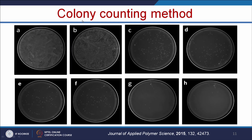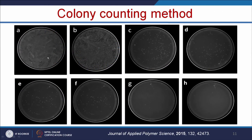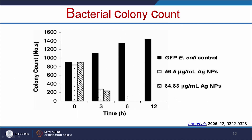Another method is the colony counting method. From the turbidity assay test tubes, inoculate into a bacterial plate by spread plating technique and incubate overnight, then count the number of colonies. In the control, there is a huge number of colonies (lawn of bacteria), and with increasing nanoparticle concentration, the number of bacterial colonies decreases. This can be plotted quantitatively.